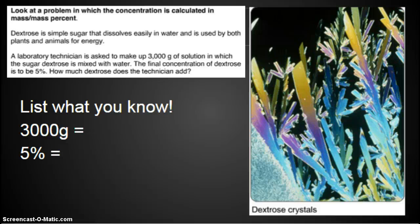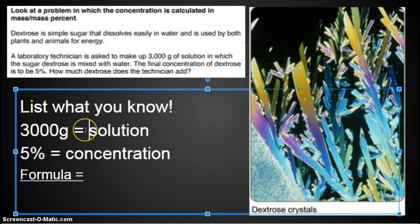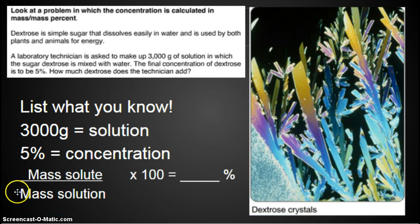A laboratory technician is asked to make up a 3,000 gram solution in which the sugar dextrose is mixed with water. The final concentration of dextrose is to be 5 percent. How much dextrose does the technician add? List what you know. We have 3,000 grams and 5 percent. We have 3,000 grams of solution, and 5 percent is our concentration.